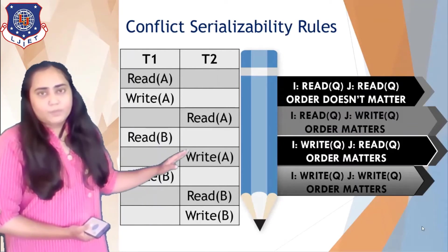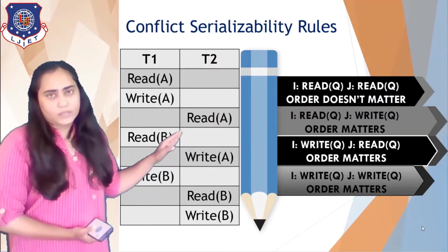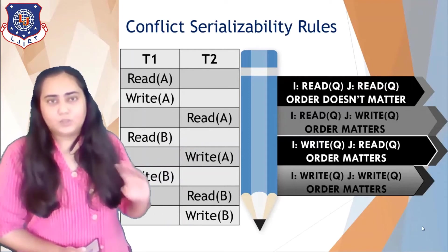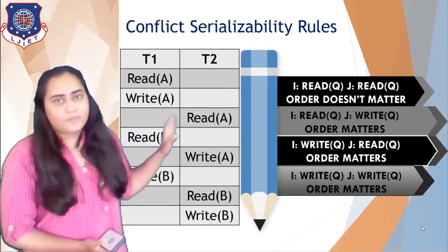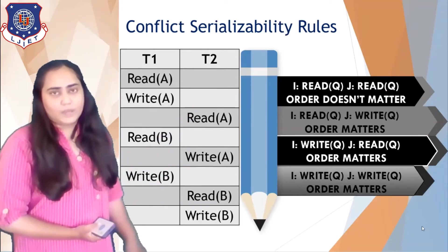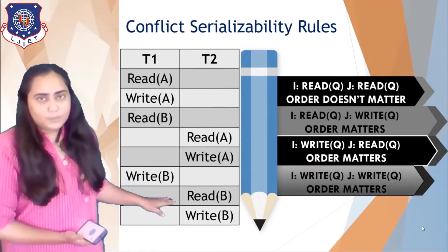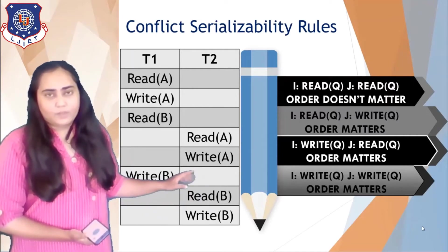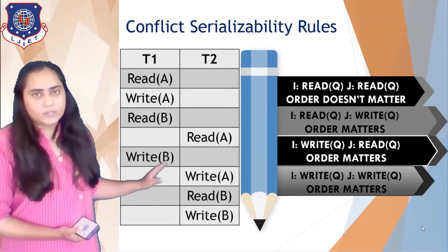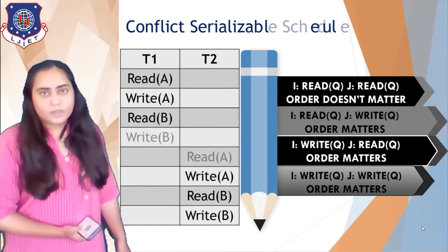Now I compare read B with read A. Again they are working on two different data items, so I can also swap those two — I can bring read A down and read B up. Next, write B compared with write A: again different data items, so that can be shifted too. Then write B and read A are also different data items and can be shifted.